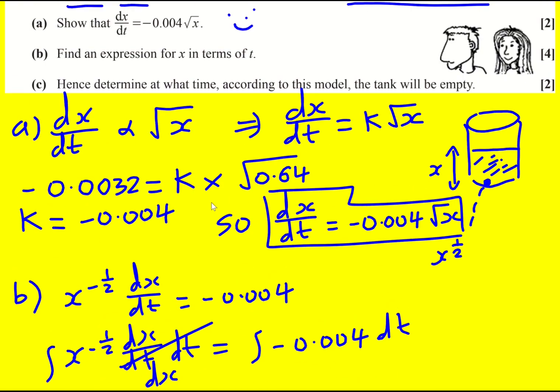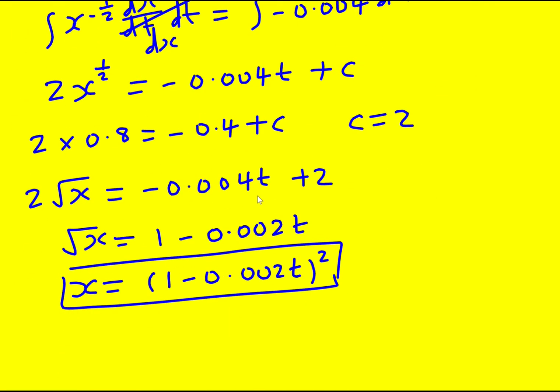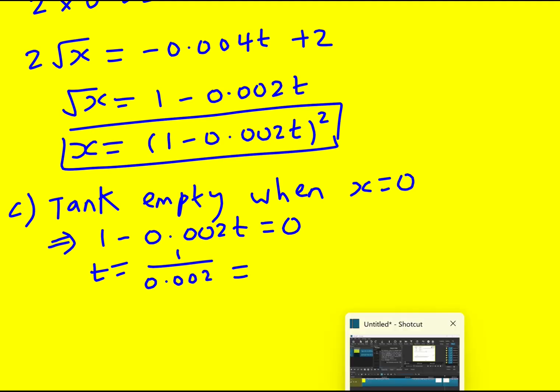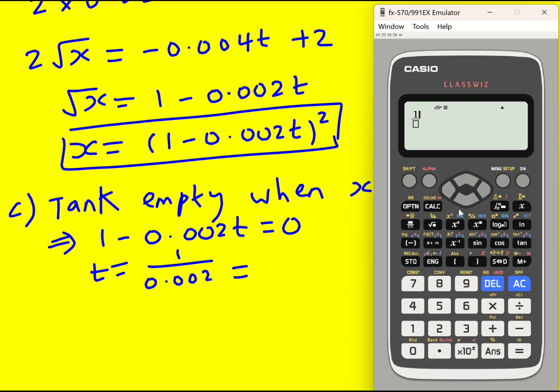Finally we're asked to hence determine at what time, according to the model, the tank will be empty. So tank empty. Well it's going to be when the height of the water is 0, so when x is equal to 0. And that is going to be when the bracket is 0. So 1 minus 0.002 t is equal to 0. So I can add 0.002 t onto both sides and then divide by 0.002, so it's going to be 1 over 0.002 which gives 500.